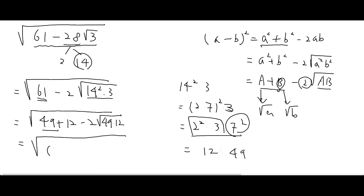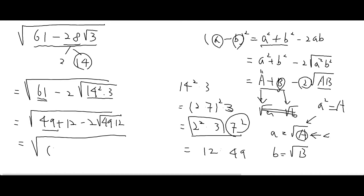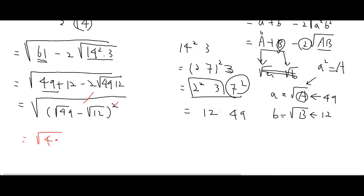So this means: capital A² = A, which means A = √(capital A). Similarly, capital B = √B. We found the two parts are 49 and 12, so this becomes (√49 − √12)² inside the outer radical. Taking out the outer square root, the answer is √49 − √12, which simplifies to 7 − 2√3.